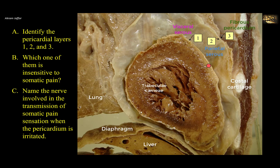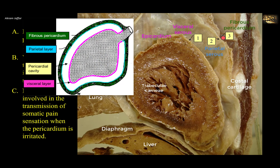The visceral serous pericardium forms the outer surface of the heart and constitutes the epicardium. The parietal layer of the serous pericardium is fused to the fibrous layer with no space between them, but there is a space between the parietal and visceral layers — the pericardial space — which contains a thin film of serous fluid secreted by the mesothelium, the simple squamous epithelium lining both surfaces. In reality this is a potential space, but it appears large here due to tissue shrinkage during preparation of the plastinated specimen.